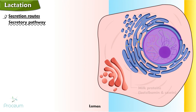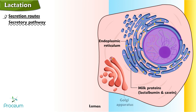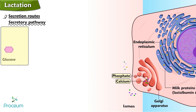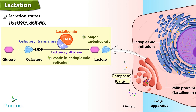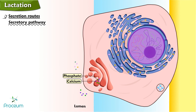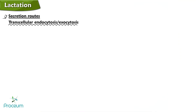In the secretory pathway, milk proteins lactalbumin and casein are synthesized in the endoplasmic reticulum and sorted to the Golgi apparatus, where alveolar cells add calcium and phosphate to the lumen. Lactose synthetase in the lumen of the Golgi catalyzes the synthesis of lactose, the major carbohydrate. Lactose synthetase has two components — a galactosyl transferase and lactalbumin — both made in the endoplasmic reticulum. Water enters the secretory vesicle by osmosis.